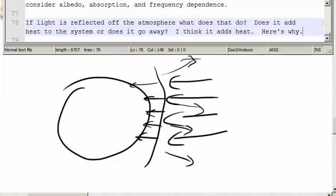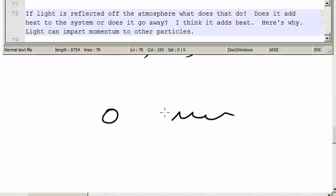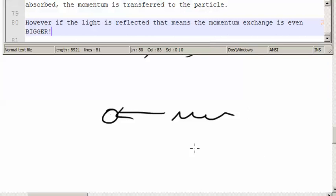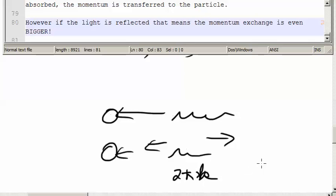I think it adds heat. Here's why. Light can impart momentum to other particles. If light comes in and is absorbed by this particle, the momentum is also transferred to the particle. However, if the light is reflected, that means the momentum exchange is even bigger. The photon would come in this way, and it would come out that way. The momentum exchange is actually 2 times h nu. The energy is equal to h nu. And the change in momentum would be 2 h bar k. Because it was going that way with momentum h bar k, and then it's going that way with momentum h bar k.